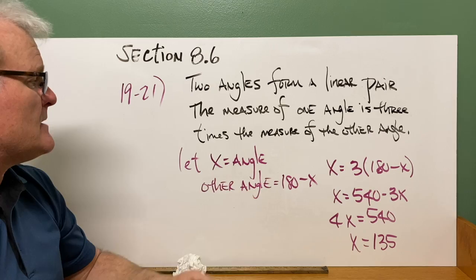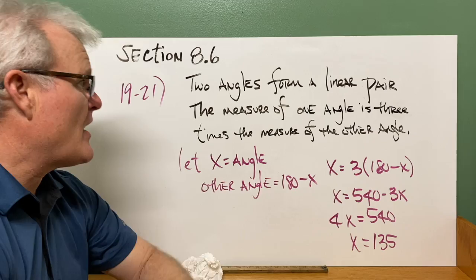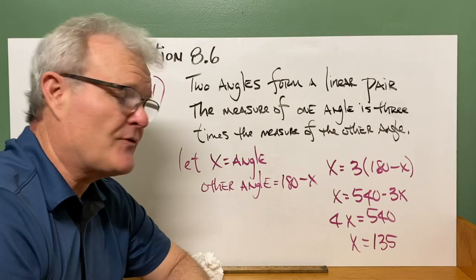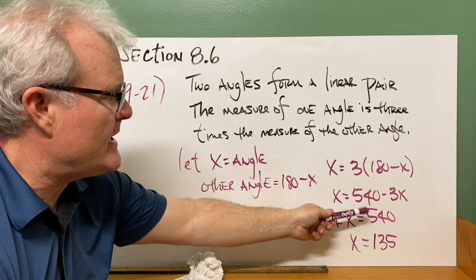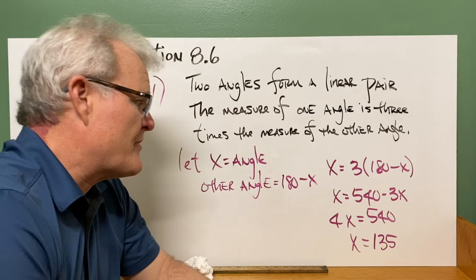So now when I do this problem, I have my x is the angle, 180 minus x is the other. If I read the problem, it says the measure of one angle, x, is, is equals three times the measure of the other. So it's three times 180 minus x. And now to solve this problem, you distribute your three here. So three times 180 is 540. Subtract 3x. You're going to add 3x to each side. You're going to get 4x is 540. Divide by 4, it gives you x is 135.